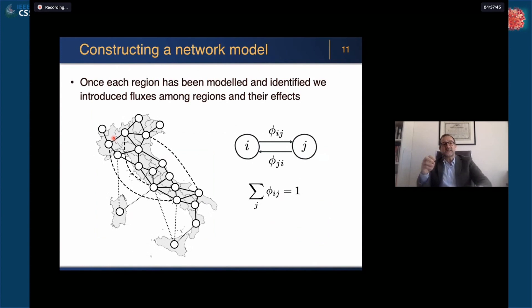Let's move now to the network model. We now have identified the models of each one of the nodes in the region. We need to introduce the fluxes between the regions. You see here, phi_ij is the flux of people moving from region i to region j, and it's a ratio so that the sum of the outgoing flows from that region is normalized to one.